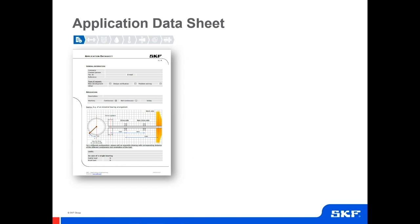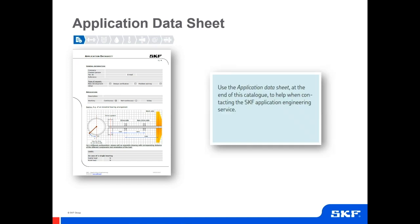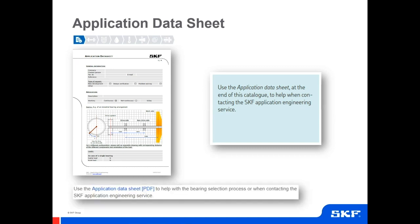The bearing selection process includes a new type of checklist that helps the customer identify and consider the factors needed to design a well-performing bearing arrangement. This chart visualizes in a compact way the link between the principal operating conditions, the application requirements, and various aspects of a bearing arrangement. Look at it as a reminder to not overlook any influencing factor.